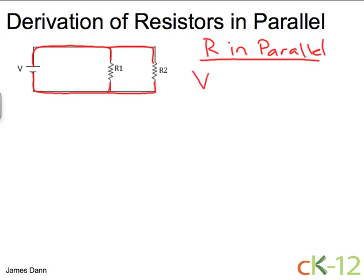they have the same voltage across them. So the total voltage coming out of the power supply is equal to the voltage across the first resistor, which is equal to the voltage across the second resistor.